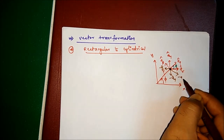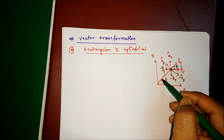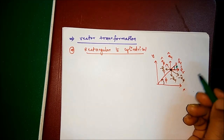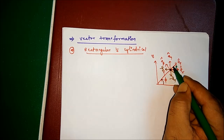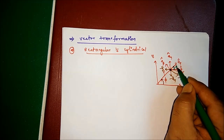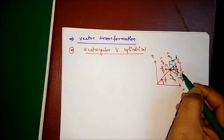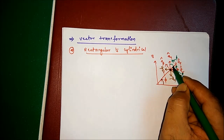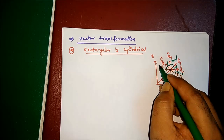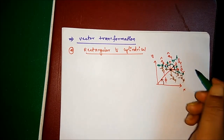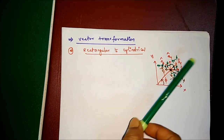According to the geometry, if this angle is φ, this angle is also φ. Since X and Y are orthogonal to each other, the angle between them is 90°. So one angle is φ, this angle is 90 minus φ, and this angle is also 90 minus φ. These two sum to 90°, so this angle is φ and this one is 90 minus φ.